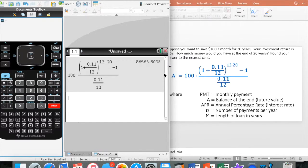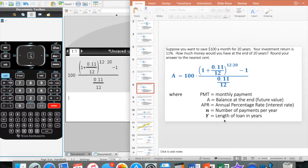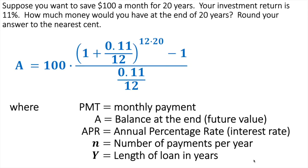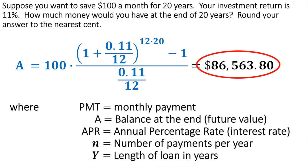This one asked me to round it to the nearest cent, so I'm going to write $86,563.80. If you're going to use the TI-83 or 84, that's fine — just write 100 times, do a big parenthesis around the whole thing. But you've got a lot of parentheses there that you really have to pay attention to.